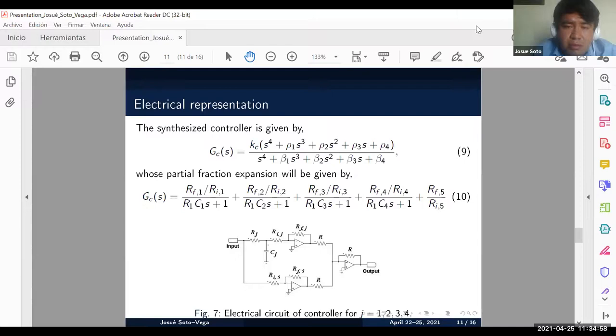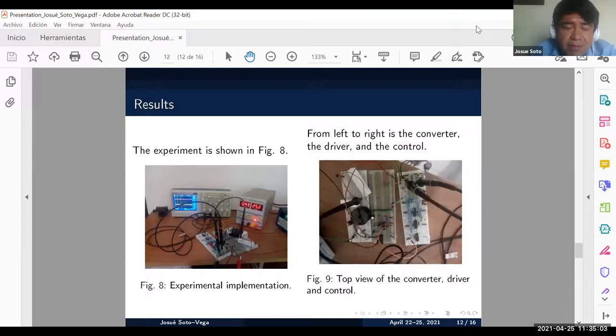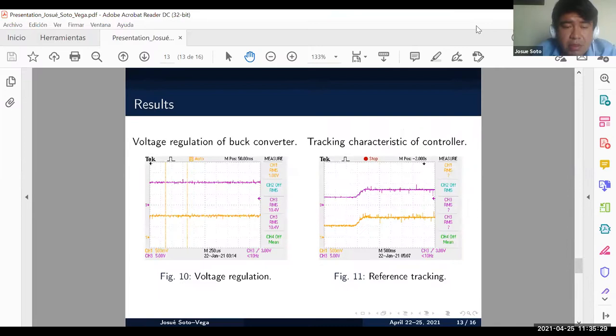The experiment was performed implementing power converter and non-integral order PID controller. In figure eight we can see experimental implementation and figure nine shows from left to right the buck converter, the driver in center, and the fractional control. Figure ten shows the voltage regulation. The yellow signal is the reference and the purple signal is the output voltage of the buck converter.